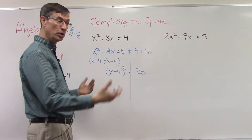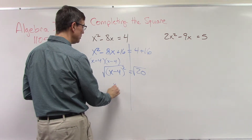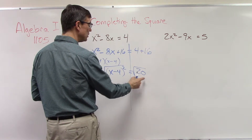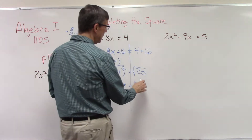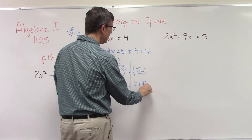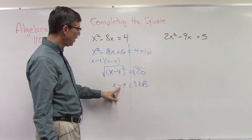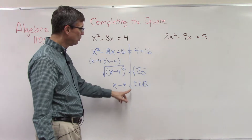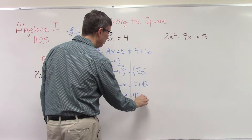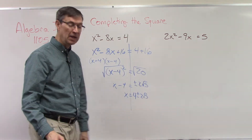We can undo the square by taking the square root of both sides, and the left side just pops out. We need to remember plus or minus, because the square root of 20 is plus or minus. Now 20 is 2 times 2 times 5, so the 2 pops out and we have the square root of 5 — that was from the previous lesson on how to simplify radicals. Then I add 4 to both sides, so x equals 4 plus or minus 2 square root of 5. We're done — that's solving by completing the square.